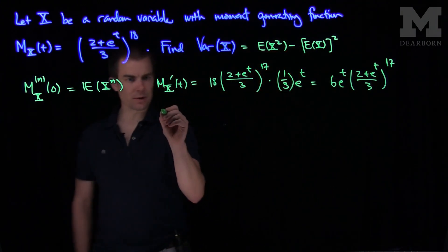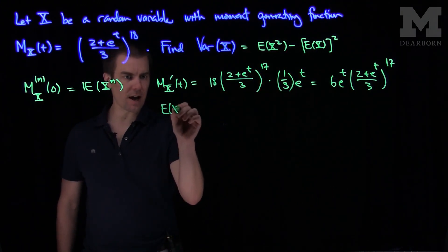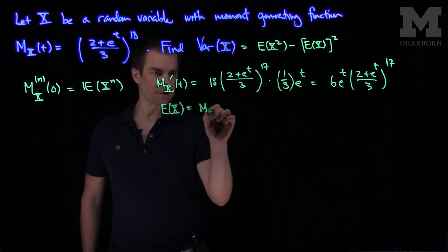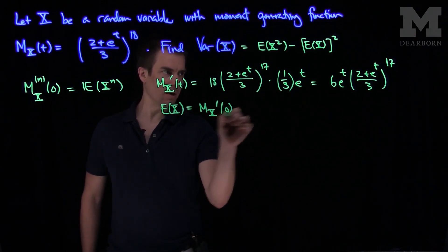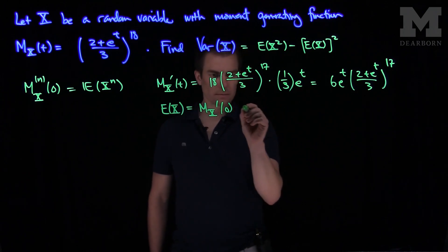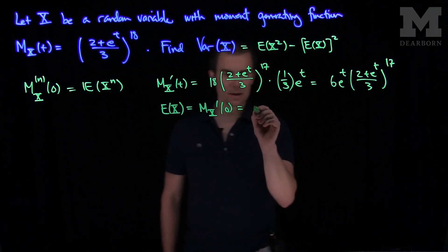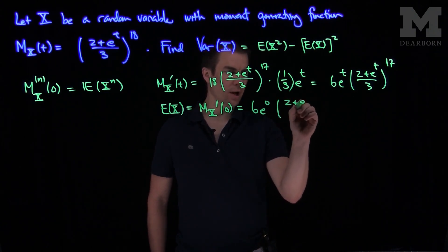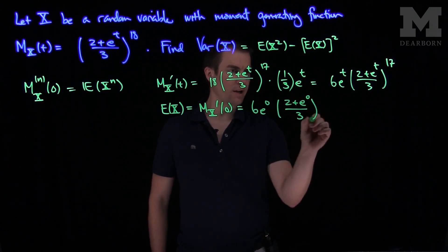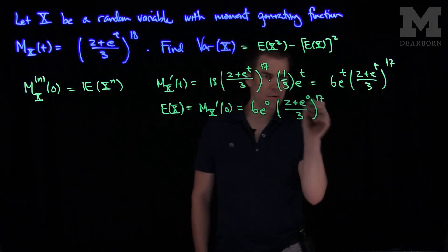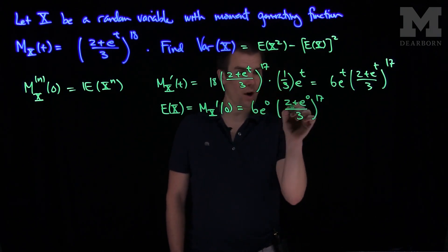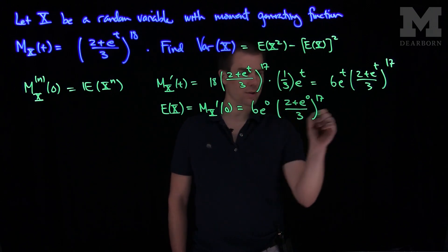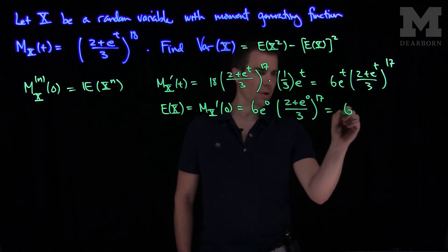If we plug in t equals 0 to this, we see that the expected value of x is equal to mx prime of 0. And that will be 6 e to the 0 and then 2 plus e to the 0 over 3 to the 17th power. Even though this looks messy, it simplifies just to 1 because I have 2 plus e to the 0, which is 1, so this is 3 over 3, which is 1. So the first moment is 6.